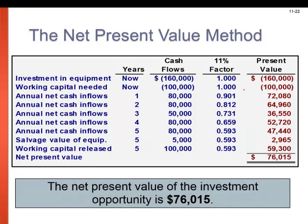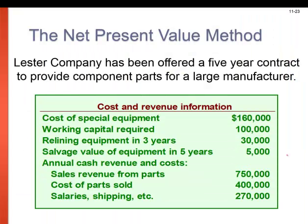Then you sum all the present values together to get a total positive net present value of $76,015. We're going to do it a little bit different this time — using the annuity table for this situation. Annuities are fixed sums of money paid to someone each year, the same amount every year. Since we are receiving the same annual cash revenue and cost each year, we can use the annuity table on page 555. I've added some videos on net present value in the supplemental resources.